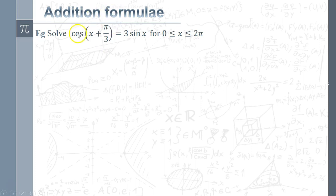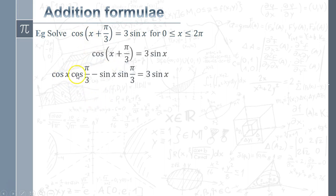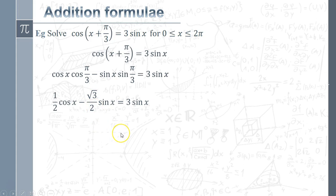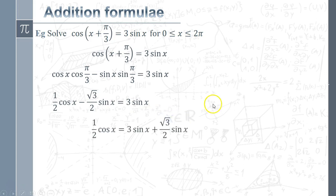Using the addition formula, cos(x + π/3) = cos x cos(π/3) − sin x sin(π/3). Now cos(π/3) = 1/2 and sin(π/3) = √3/2. The key point is that now everything is expressed in terms of the same angle x — we've removed the mismatch between x and (x + π/3). We're heading towards a sin/cos = tan situation, so let's collect all sine terms on one side.